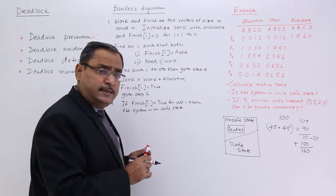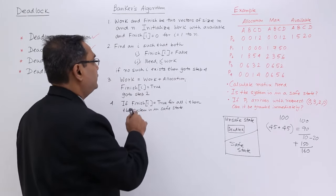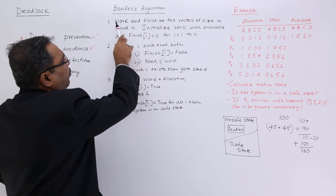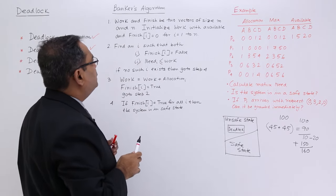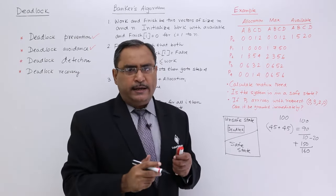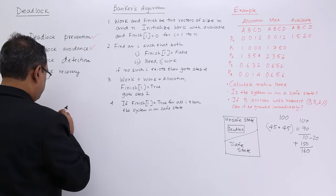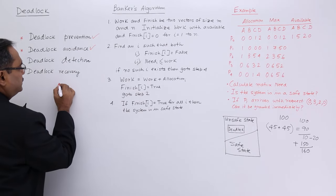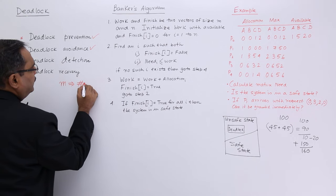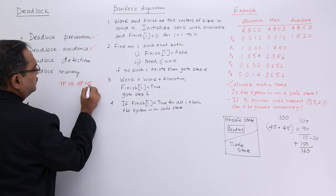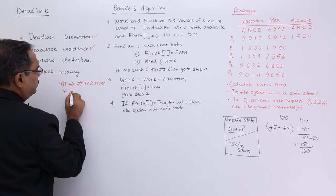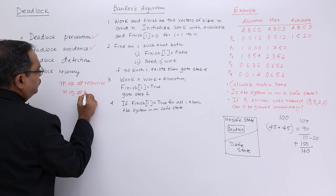So many numerical problems used to come in the GATE exams and also in semester exams on this Banker's algorithm. It is a very popular algorithm in the deadlock chapter. The Banker's algorithm states that work and finish be two vectors of size m and n. M denotes the number of resources and n denotes the number of processes.